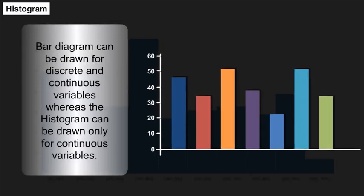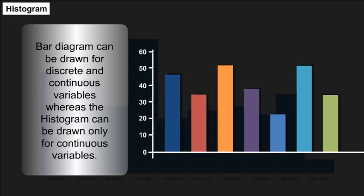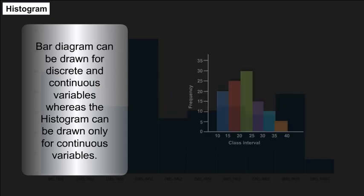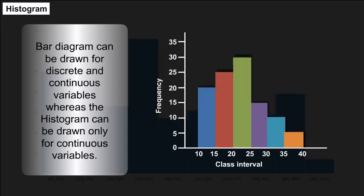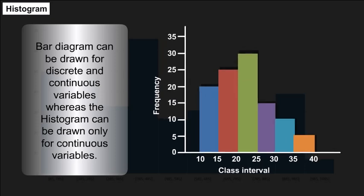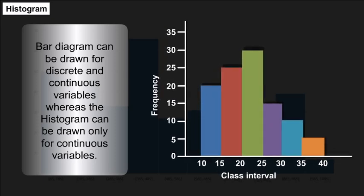Bar diagrams can be drawn for both discrete and continuous variables, whereas a histogram can be drawn only for continuous variables.